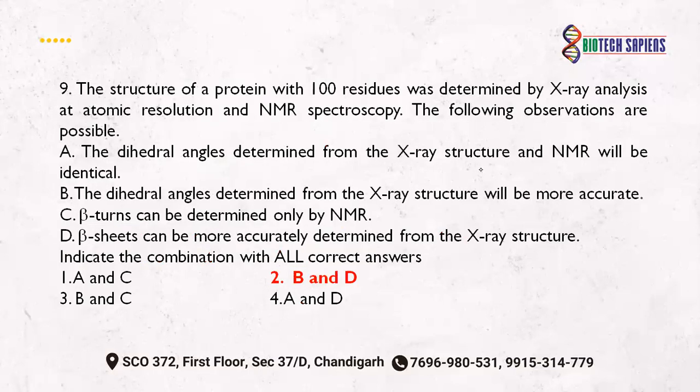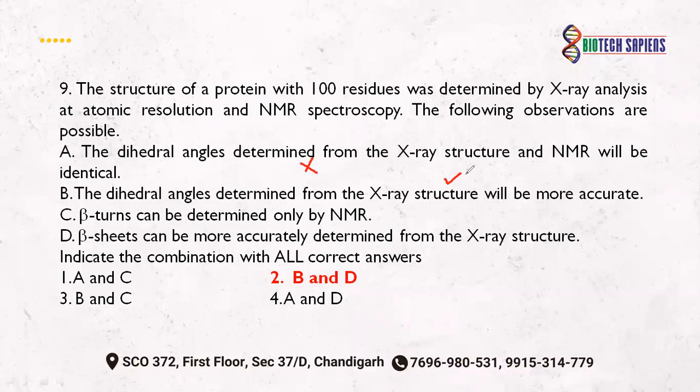The structure of a protein with 100 residues was determined by X-ray analysis at atomic resolution and NMR spectroscopy. You have four statements to evaluate. The first: exact backbone dihedral angles are obtained from the X-ray structure — not as accurately from NMR — so the first statement is correct for X-ray. Statement B: beta turns can be more accurately determined from the X-ray structure than from NMR. Both NMR and X-ray are techniques, but beta turns are better determined from X-ray structure. The correct answer here is B.